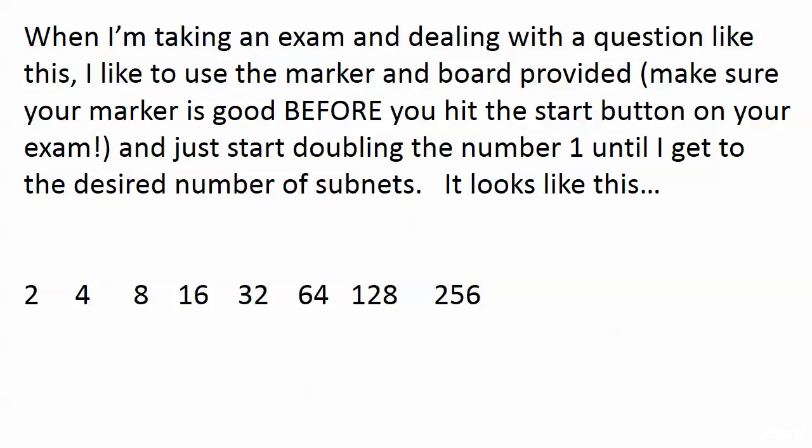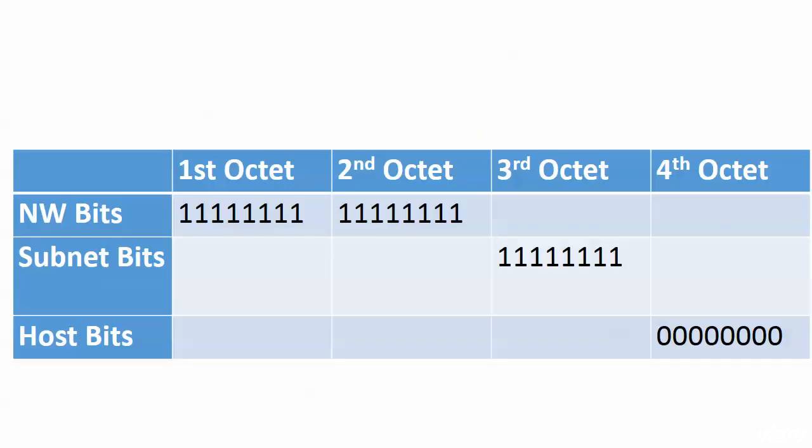So I'd write it up: 2, 4, 8, 16, 32, 64, 128, 256. I know that I need 8 subnet bits to meet the requirement of at least 200 subnets — 256 is the lowest number in that sequence that meets the requirement. But we are not done.